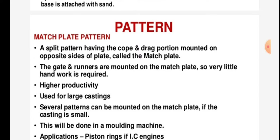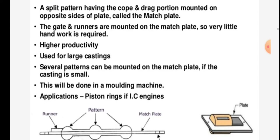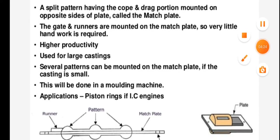Match plate pattern: a split pattern having a cope and drag portion mounted on opposite sides of a plate is called a match plate. The gates and runners are mounted on the match plate, so very little hand work is required. It offers higher productivity and is used for large castings. Several patterns can be mounted on the match plate if the casting is small.